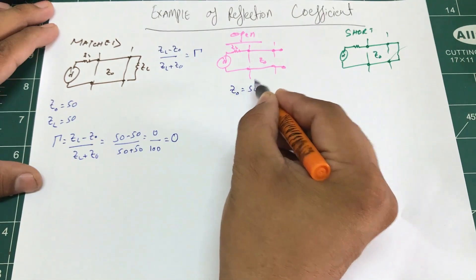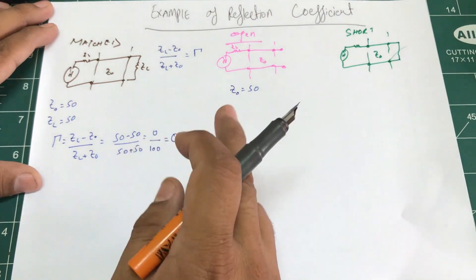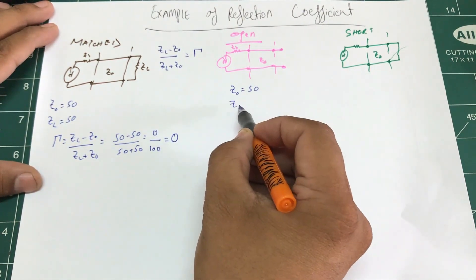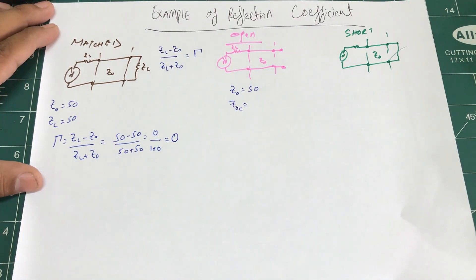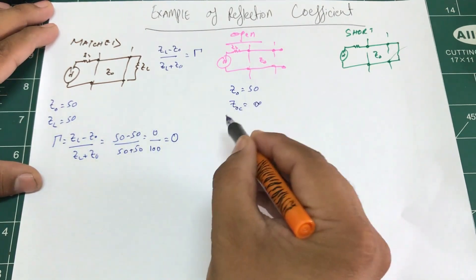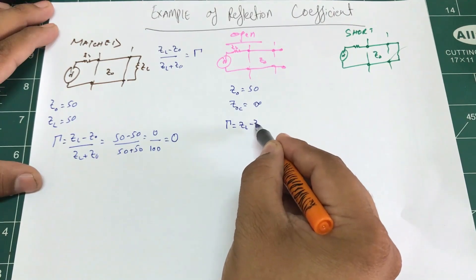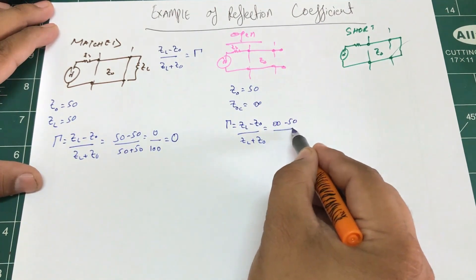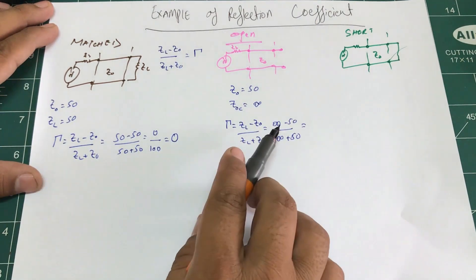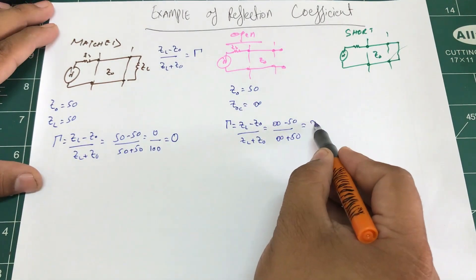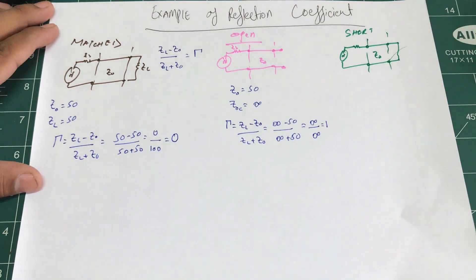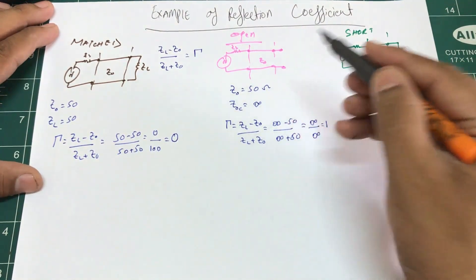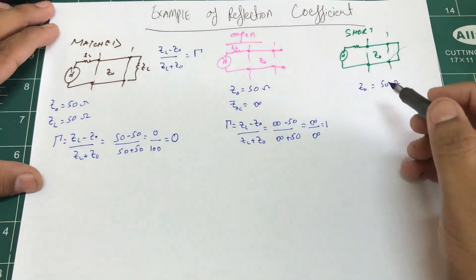For an open circuit, Z0 is still 50 ohms, and we assume the line is lossless. The impedance of an open circuit is infinity. Plugging into the formula: infinity minus 50 divided by infinity plus 50. Both numerator and denominator approach infinity, so the reflection coefficient equals one.